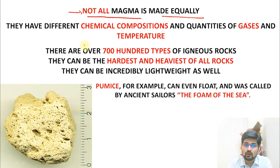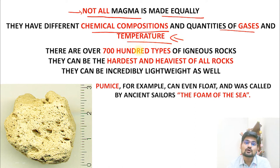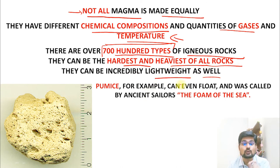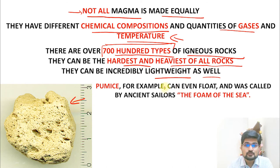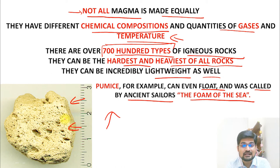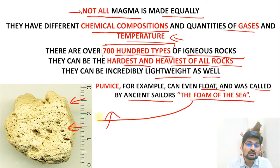Not all magma is made equally — they have different chemical compositions, quantities of gases, and temperatures trapped inside. There are over 700 types of igneous rocks discovered so far, and they can be the hardest and heaviest of all rocks, but also incredibly lightweight. Pumice, for example, can even float on water — ancient sailors called it the 'foam of the sea.' It is very light yet it is an igneous rock.